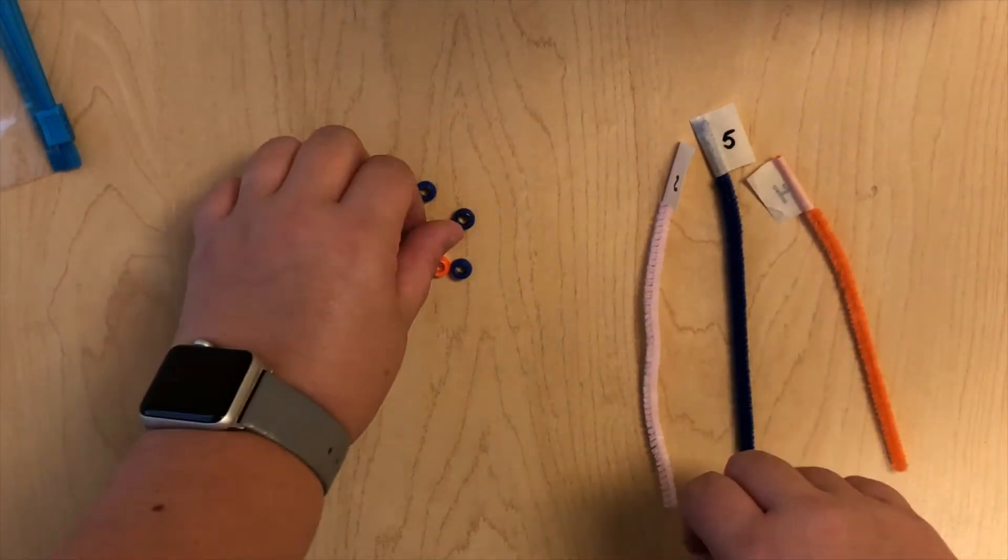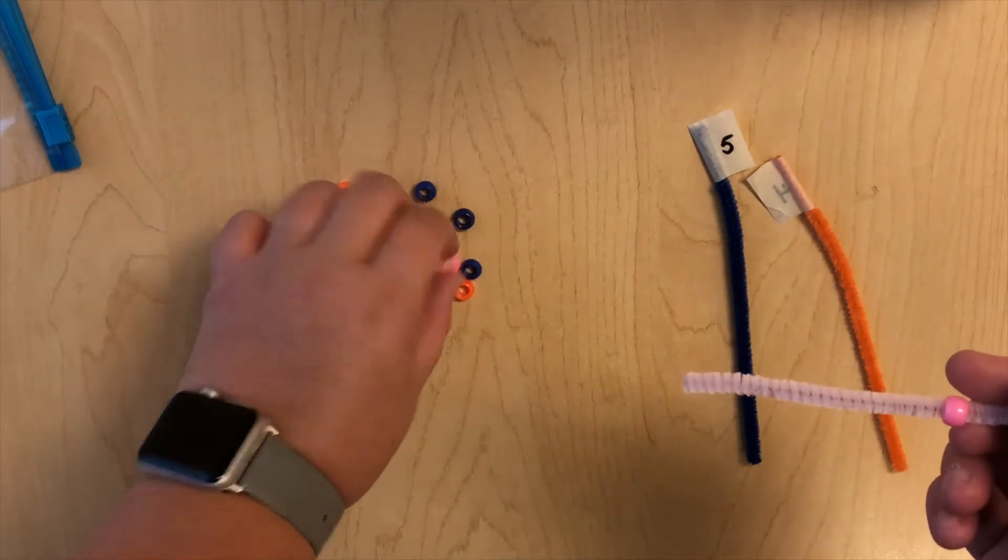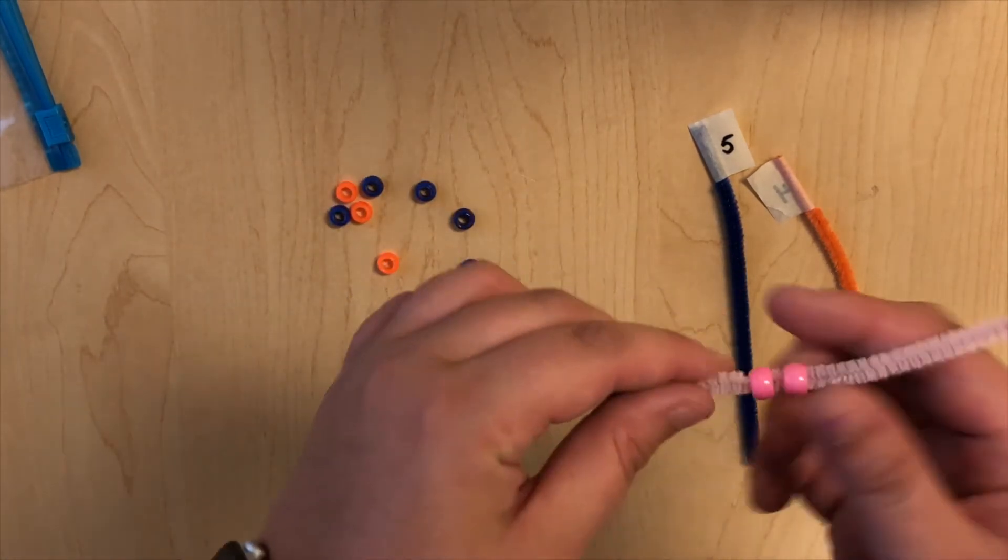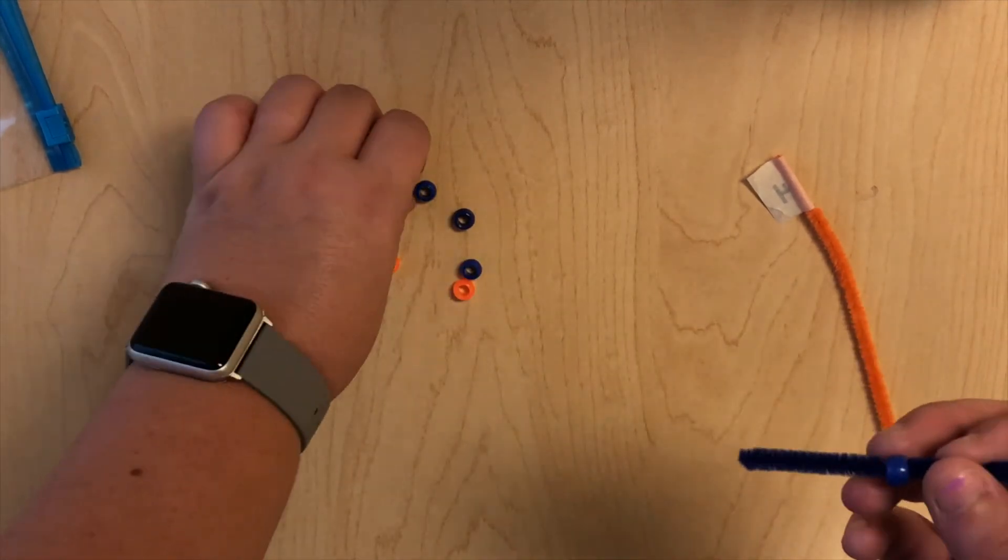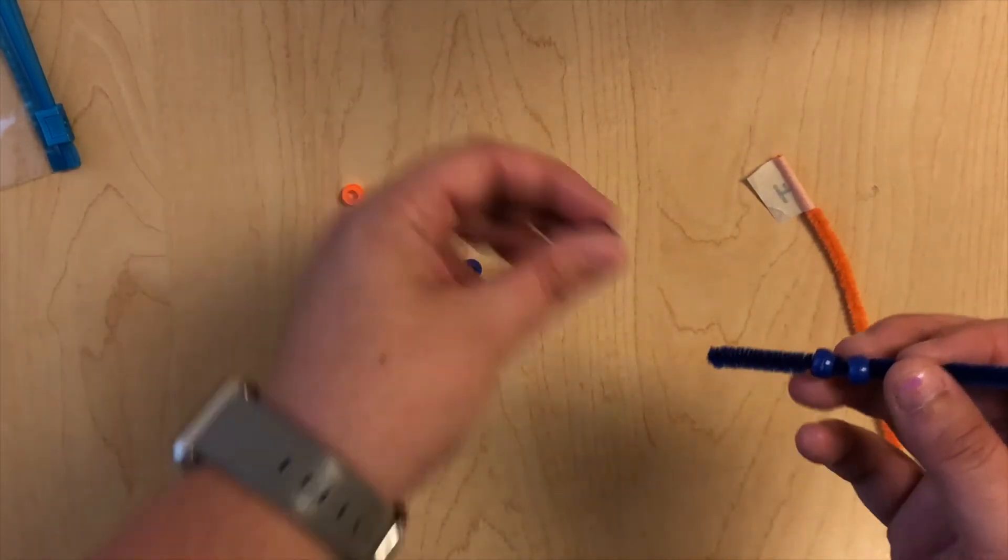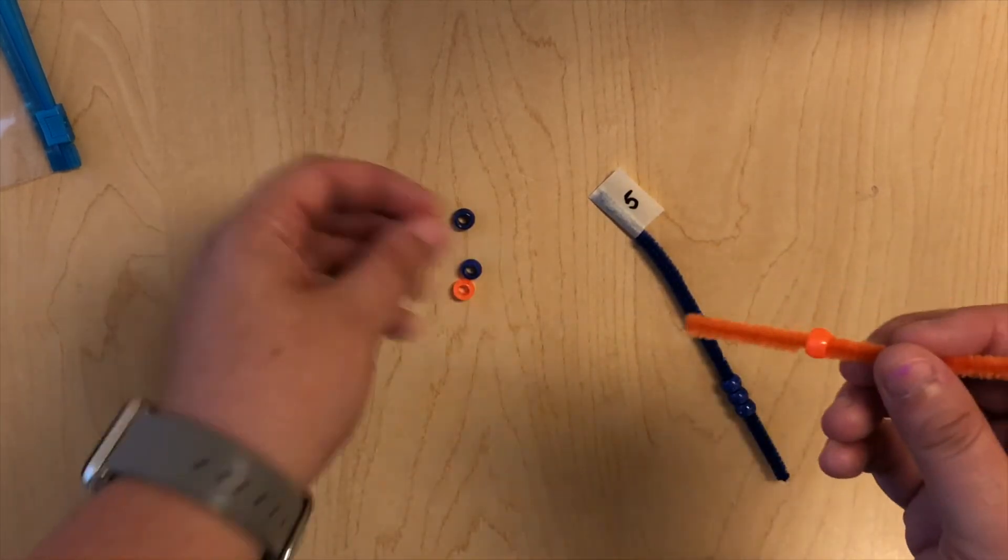So I'm going to start with the pink - the pink goes with the pink. I'm just going to bead it on, slide it on like you're making a bracelet. And then do blue. I'm going to do orange.